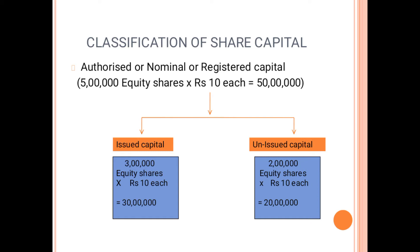The authorized capital is also called nominal capital. The company cannot collect more than the authorized capital. For example, in the ABC Company case, the company can never collect more than 50 lakh rupees from the public, because it is mentioned in the registered capital. If the company wants to increase the authorized capital, they have to follow some process.